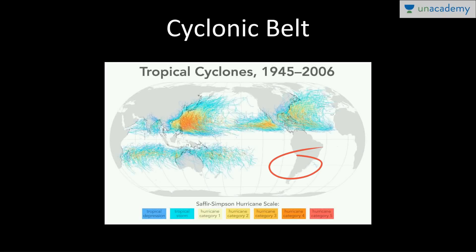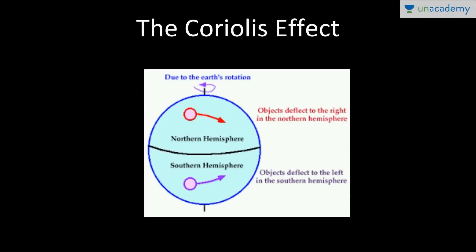In the northern hemisphere you are deflected to the right, and in the southern hemisphere to the left, because of the Coriolis force. You need Coriolis force for the rotation of a cyclone — without it, no rotation occurs, and cyclones cannot form. The Coriolis effect is maximum at the poles and zero at the equator, because Earth rotates much faster at the equator than at the poles.